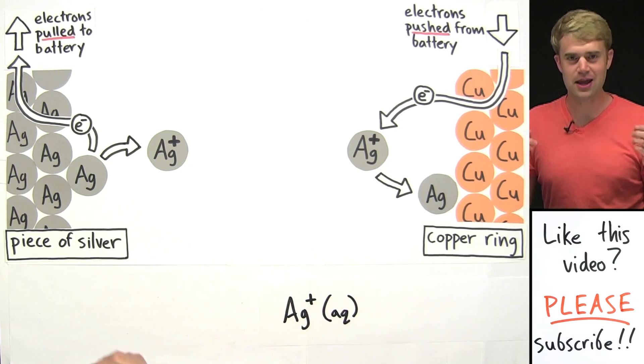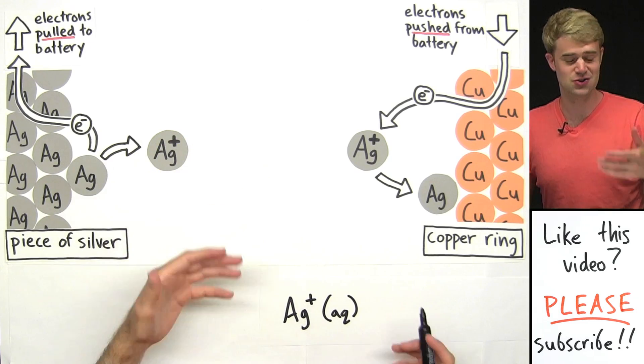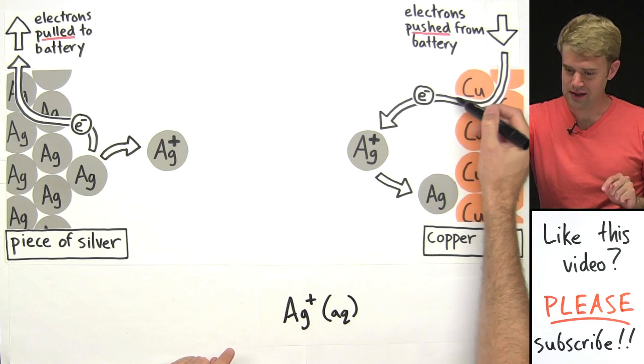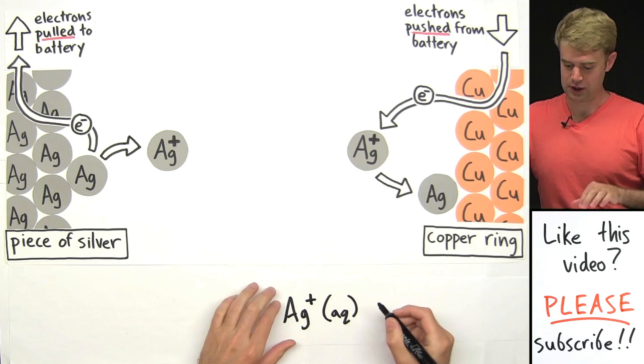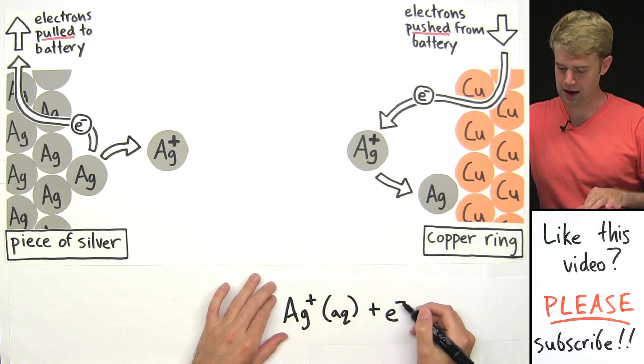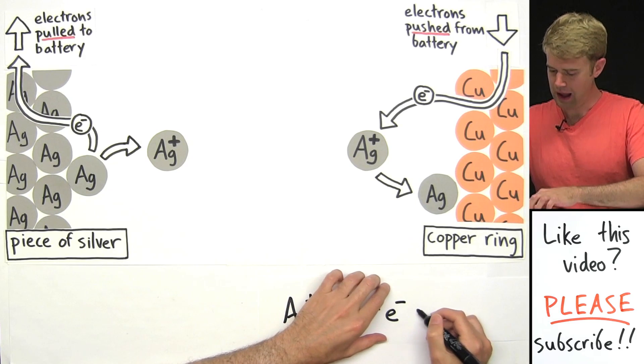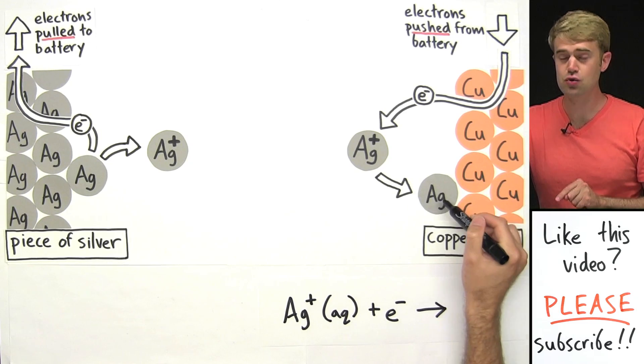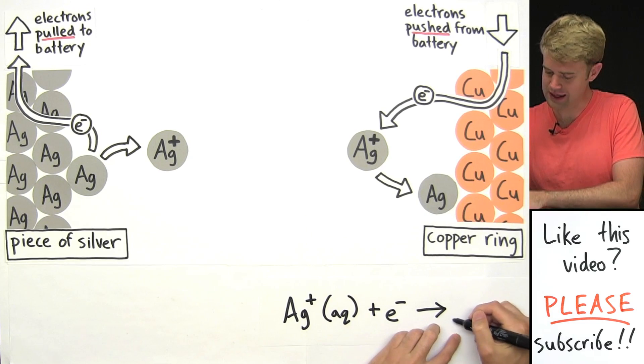And now what's the physical state of the Ag one-plus? Well, it's dissolved in the solution, so I can show that by writing AQ in parentheses after it. AQ stands for aqueous, which means dissolved in solution, dissolved in water. So Ag one-plus then receives an electron. So I will write plus E minus, E minus the symbol for electron. And then I got my arrow, and what does this give us? It gives us a neutral silver atom, Ag.